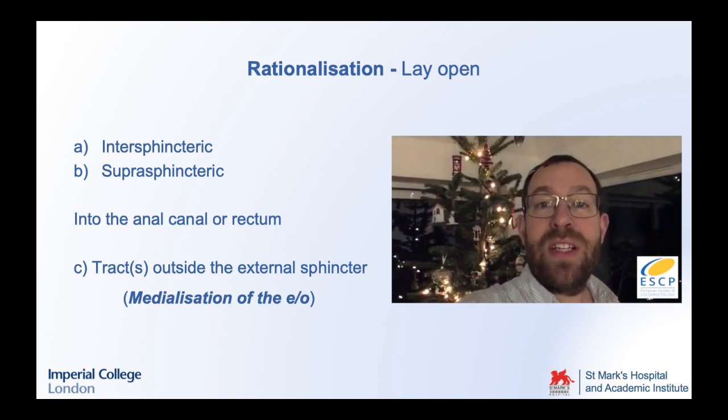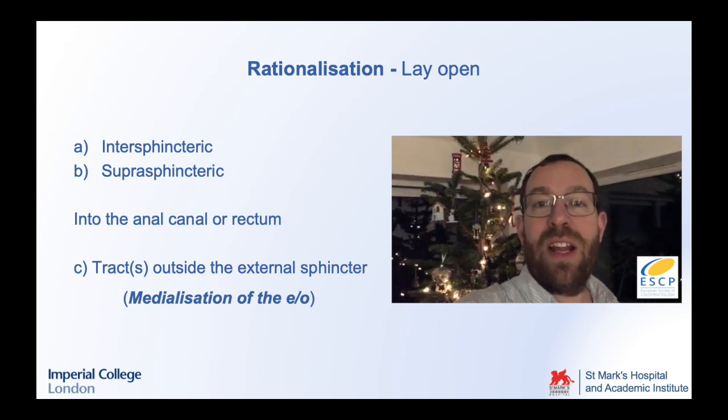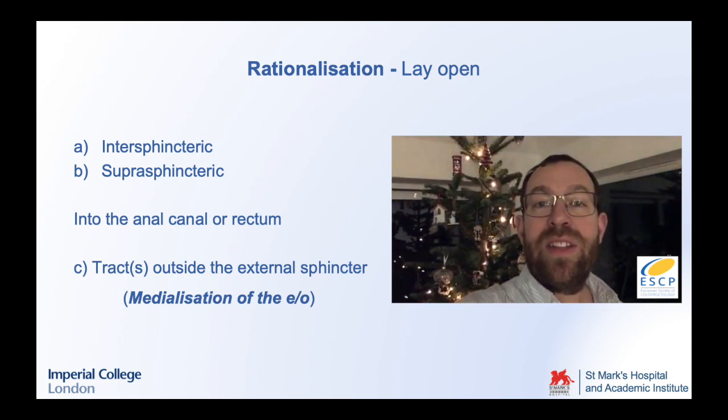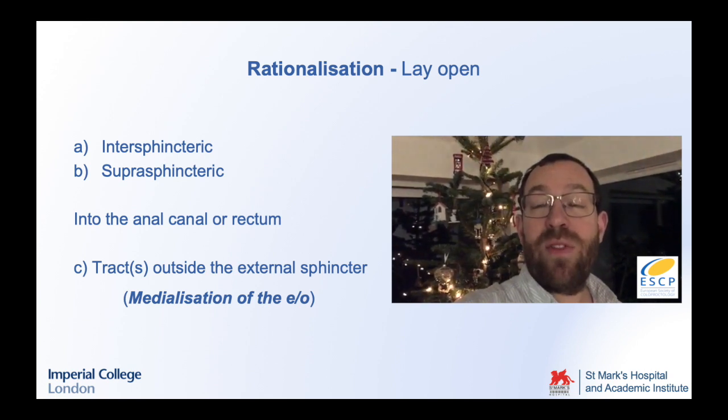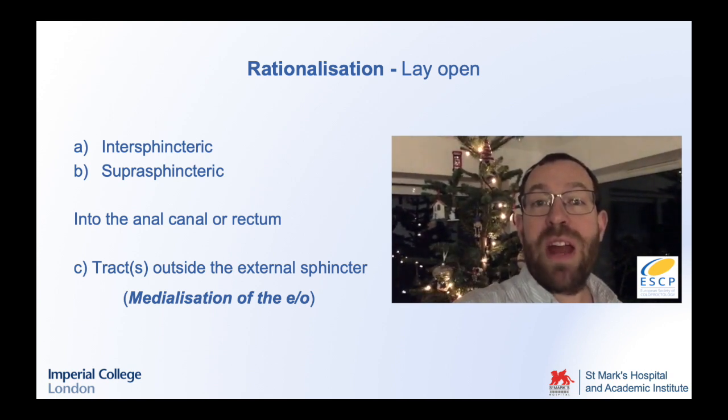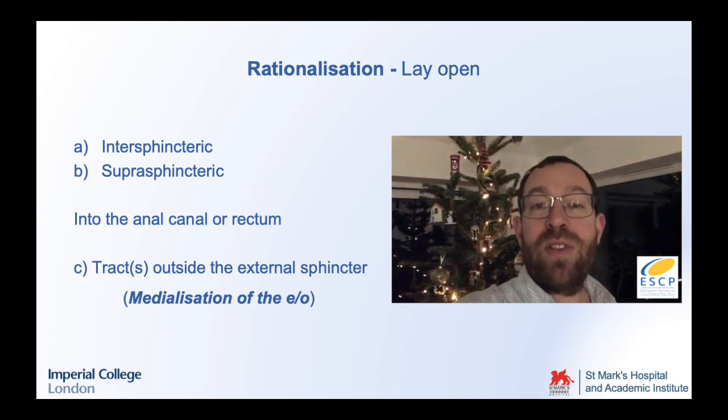The other area which is simpler is to lay open tracts outside the external anal sphincter in the ischio-anal fossa. This can sometimes be relatively modest, for example shortening the tract outside the external sphincter or combining two external openings. Or it can be very large, with an incision running from three o'clock right round to nine o'clock posteriorly behind the anal canal, in the case of an extra-sphincteric horseshoe with a trans-sphincteric tract running into the anal canal at six o'clock.